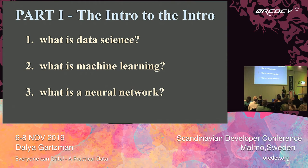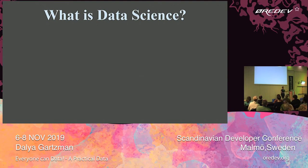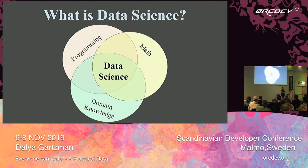First, what is data science? Here's a diagram I copied from the internet. It says that data science is the intersection between programming, mathematics, and domain knowledge. Domain knowledge means that if you want to start a startup that involves tourism in Malmö, then maybe you should know Malmö and know what it means to be a tourist.